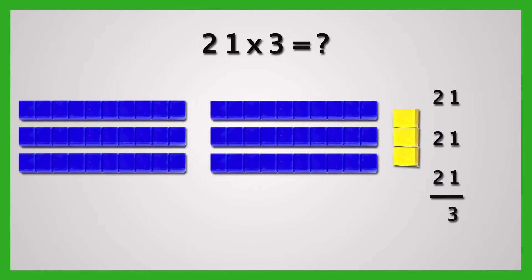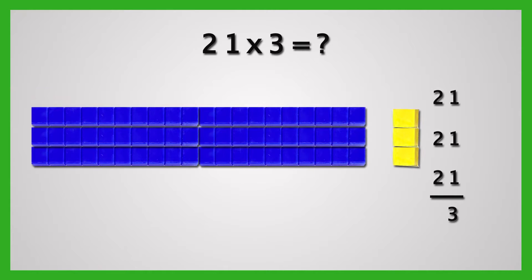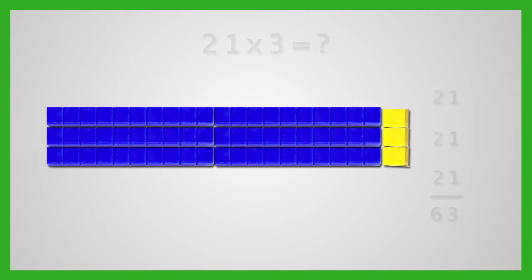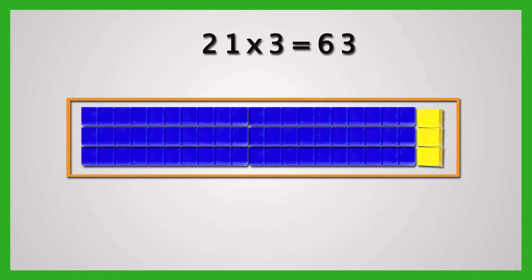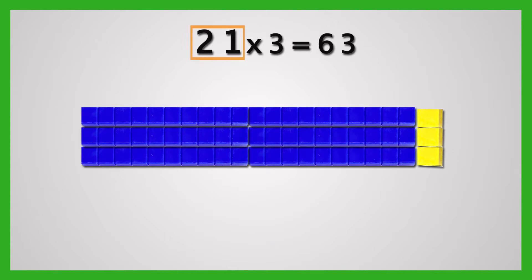Now join the tens. We have six tens. The product is 63. Here 21 is the multiplicand, 3 is the multiplier, and 63 is the product.